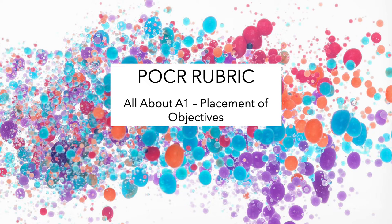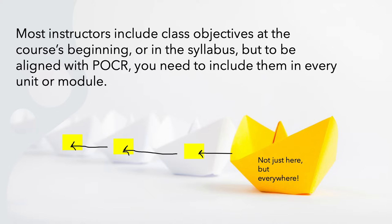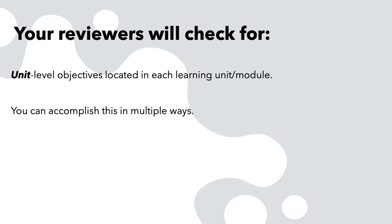Conquering item A1 of the POCR rubric requires including your course objectives in each unit of your class. Most instructors include class objectives at the course's beginning or in the course syllabus, but to be aligned with POCR you need to include them in every unit or module. Your reviewers will check for unit-level objectives located in each learning unit or module.